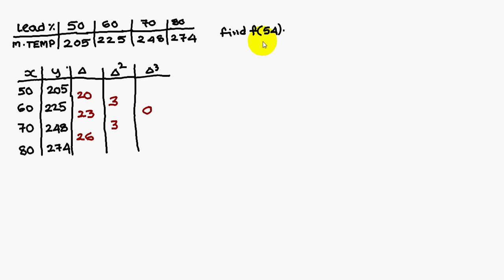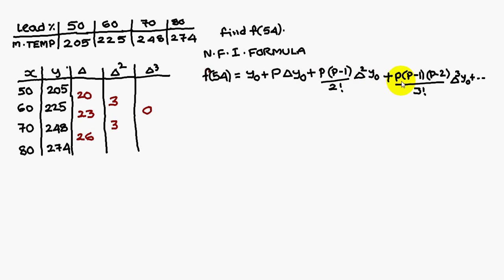Find F of 54 we have to find out. The Newton forward interpolation formula says F of 54 is y₀ plus p Δy₀ plus p(p-1)/2! Δ²y₀ plus p(p-1)(p-2)/3! Δ³y₀ plus so on.